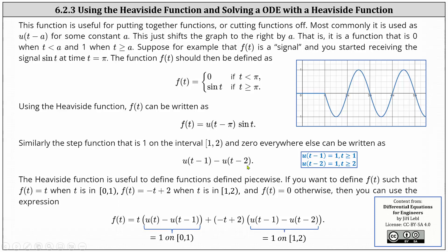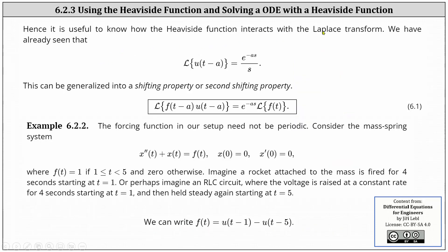The Heaviside function is useful to define piecewise functions as well. If we want f(t) = t on [0, 1), f(t) = −t + 2 on [1, 2), and f(t) = 0 otherwise, we can write f(t) = t · [u(t) − u(t − 1)], where the difference is one on [0, 1), plus (−t + 2) · [u(t − 1) − u(t − 2)], where this difference is one on [1, 2).